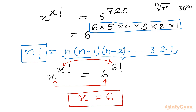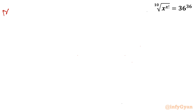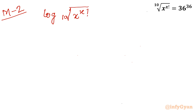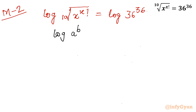Now let us consider Method 2. Here I will take log of both sides. So I will write: log of the 10th root of x raised to the power x factorial, equal to log of 36 raised to the power 36. Now I will use the log property — log(a^b) = b·log(a). The 10th root can be written as power 1/10, so the left-hand side becomes x raised to the power x factorial.